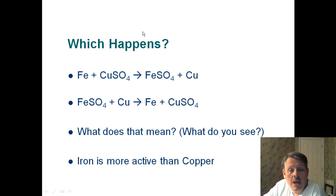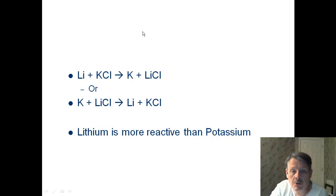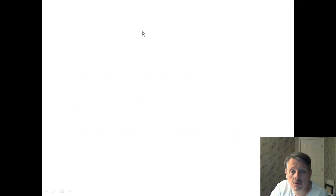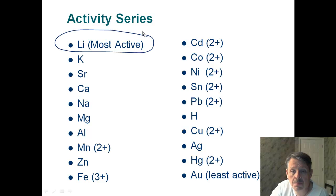All right, so which actually does happen? We have to look at the activity series for iron and for copper. Sorry, I went the wrong way. So let's look at iron. Iron is down here. Now, you'll notice I put a charge with it. These charges that we have here, those are just the most common ions. There are other ions that can happen.